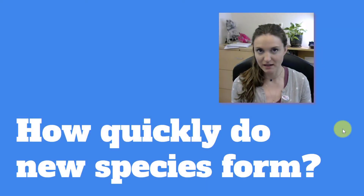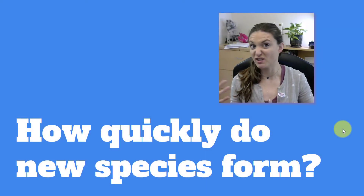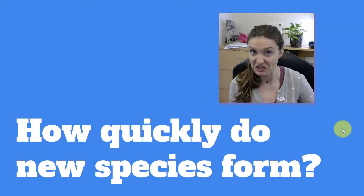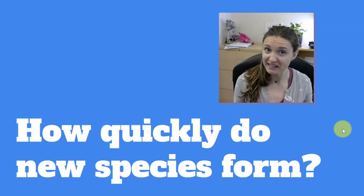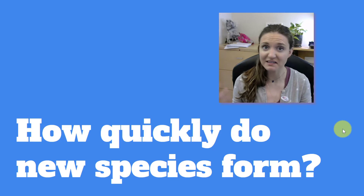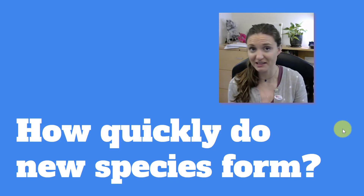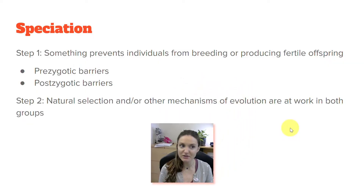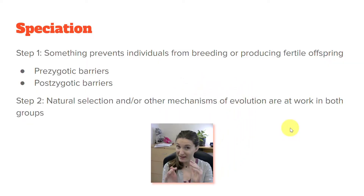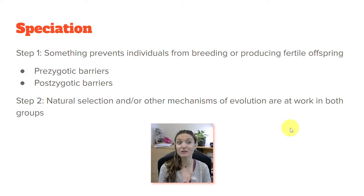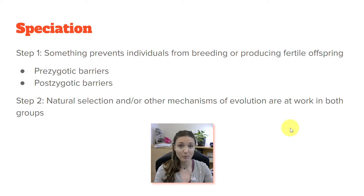So how quickly does this process of speciation take place? Is it like an overnight kind of thing, or is it like a millions of years kind of thing? Remember, speciation is when we have something that prevents individuals from breeding or producing offspring — we're separating populations, keeping those individuals from breeding.